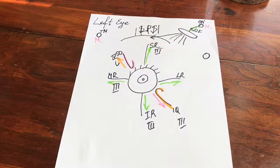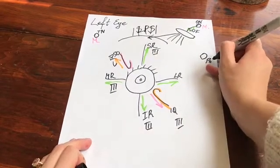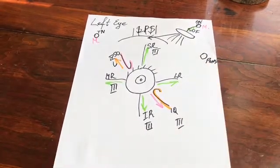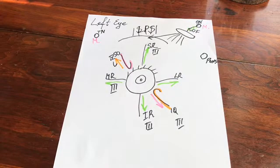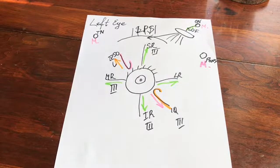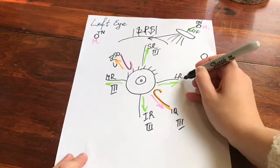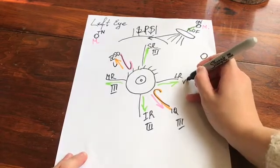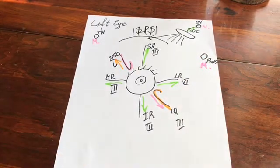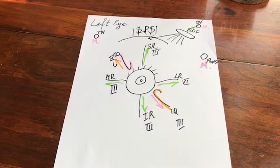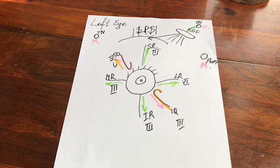The next nerve is the abducens nerve, which originates in the pons and has one motor nucleus — the nucleus abducens. Like the others, it exits the skull through the superior orbital fissure and innervates the lateral rectus muscle — you can say it abducts the eye, moving it to the lateral. This is everything about the innervation of the muscles of the eye. Goodbye everybody, have a great day!